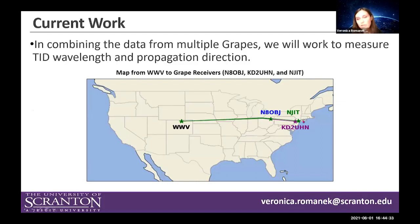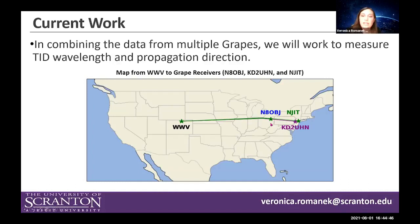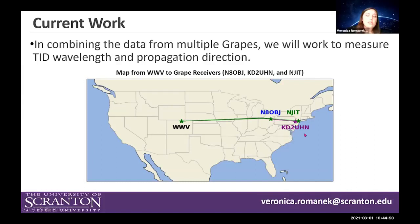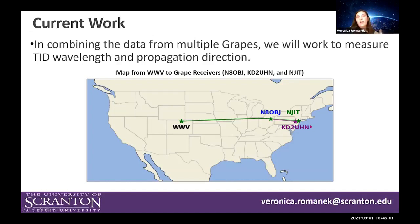We are trying to use these GRAPEs to determine the TID wavelength, propagation direction, and velocity. To do that, we need to look at data from a few different GRAPEs. We have WWV out in Colorado, a GRAPE near Case Western Reserve University in Ohio, one at my house at KD2UHN, and one in northeastern New Jersey. This isn't the ideal setup — ideally we'd have them arranged as a triangle — but so far they've been working for what we're trying to do.